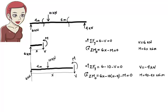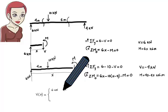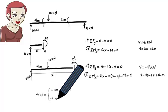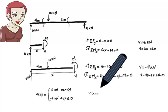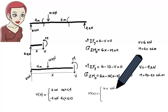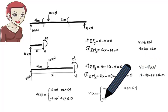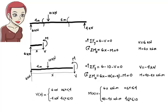Let's summarise the results. Shear in the beam is expressed algebraically using two equations. The first equation gives us the shear value when x is between 0 and 4. The second equation gives us the shear value when x is between 4 and 10. Similarly, moment in the beam is expressed algebraically using two equations. The first gives the moment value when x is between 0 and 4, and the second when x is between 4 and 10. Moment at x equals 4 can be calculated using either of the moment equations.